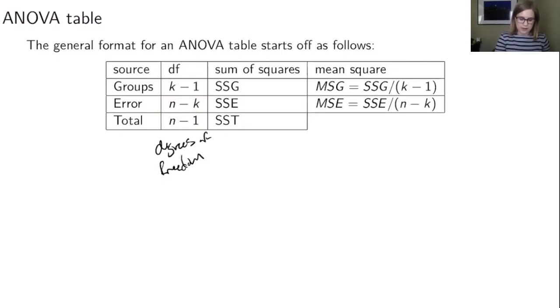Then we've got the column which is the sums of squares and so we've got the sum of squares for the groups SSG, the sum of squares for the error SSE, and the sum of squares for the total which is SST. And I haven't put in the equations here, you've got these equations that you can do but I haven't summarized them there.